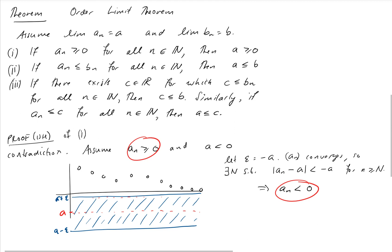So part two is quite straightforward. Now that we've got part one, part two comes out nicely because if A_N is less than or equal to B_N, it means the sequence B_N minus A_N has got to be greater than or equal to 0. And using our algebraic limit theorem, we've got scalar multiplication and we've got addition here. So that implies that B minus A is greater than or equal to 0 by part 1. So part two follows directly from part one and the algebraic limit theorem.